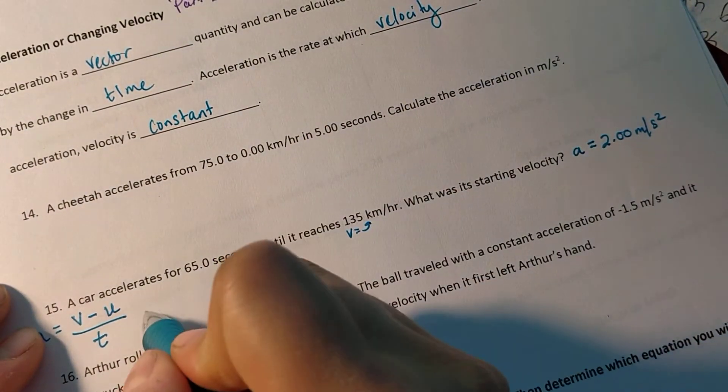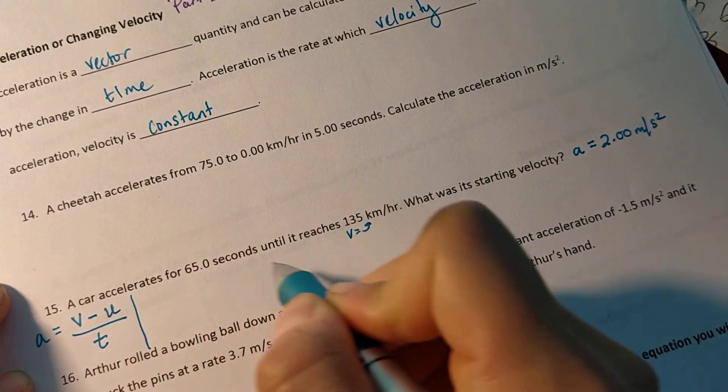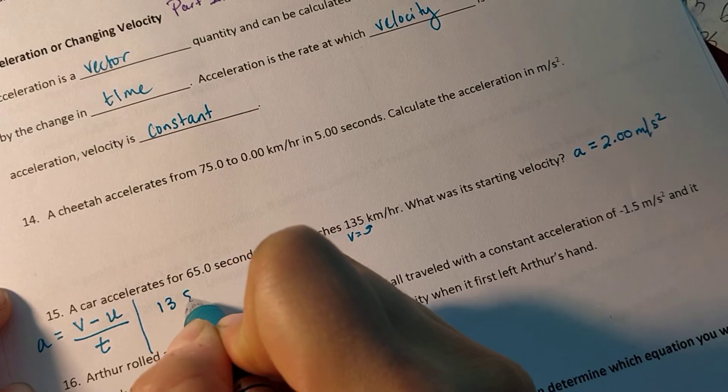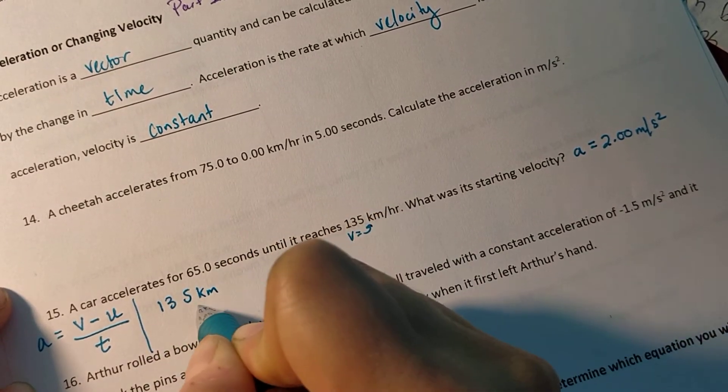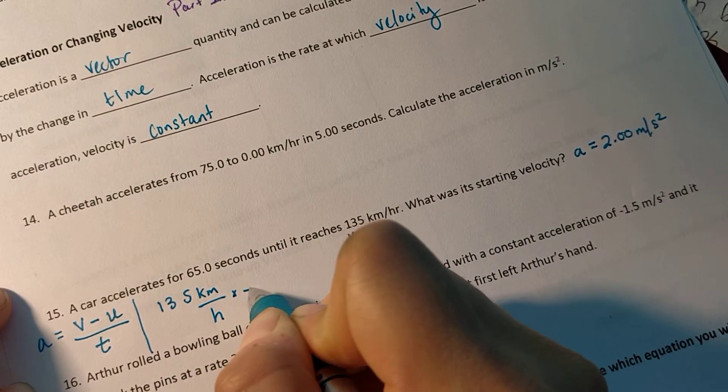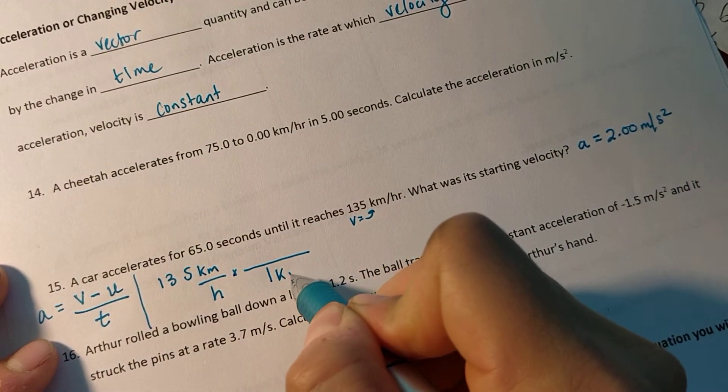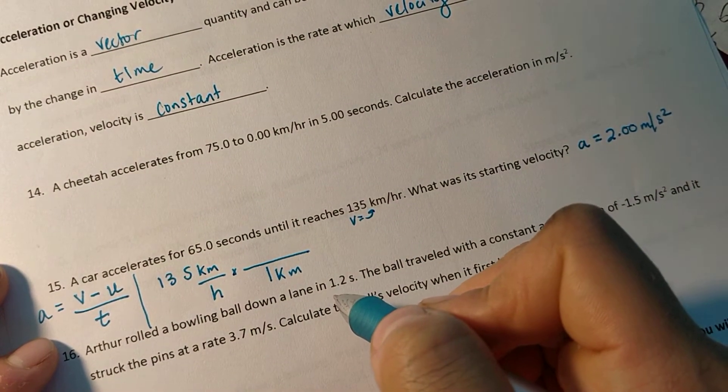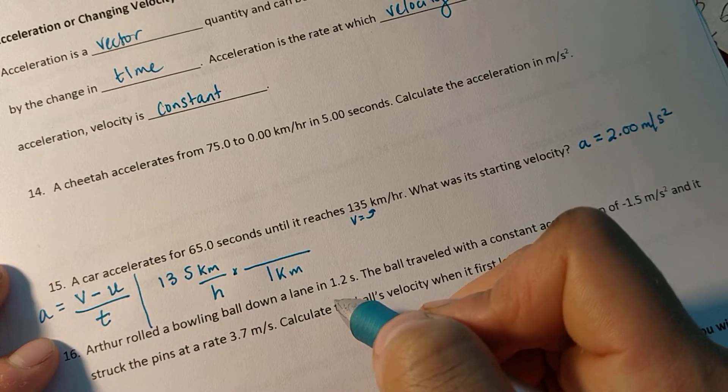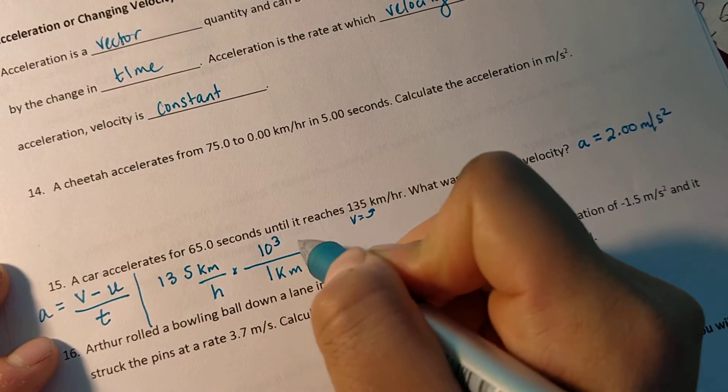So to do that, I have 135 kilometers per hour. Set up your train tracks. In one kilometer, there are, do you remember how many meters? A thousand. Ten to the third meters.